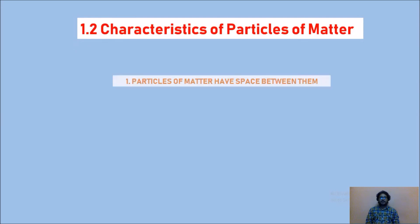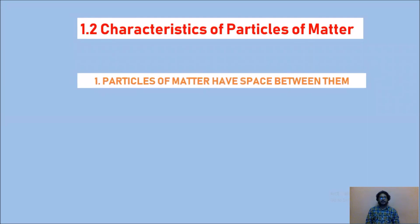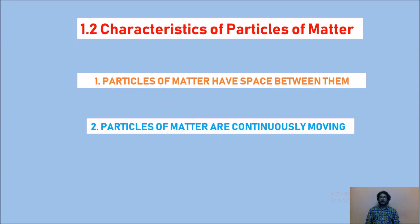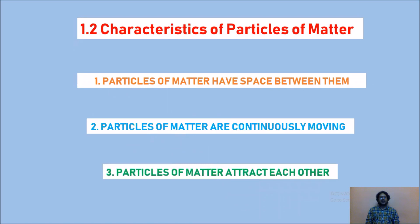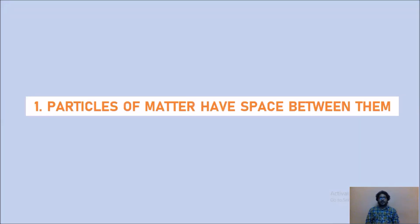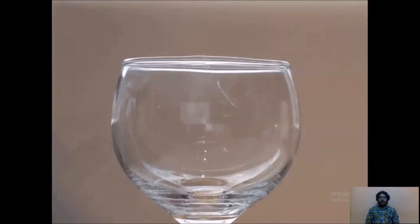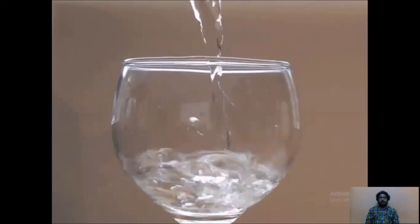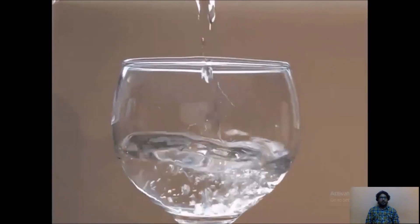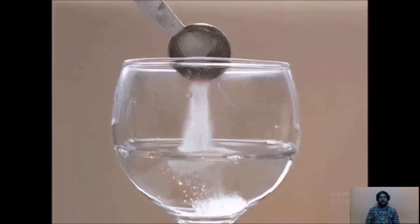The three characteristics are: number one, particles of matter have space between them; number two, particles of matter are continuously moving; number three, particles of matter attract each other. Let us discuss each in detail. Number one — particles of matter have space between them. Let us take one beaker and add some amount of water to it.